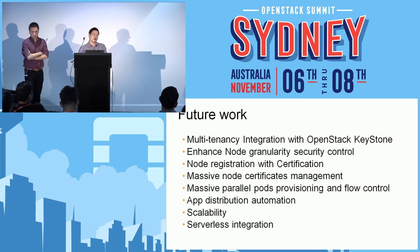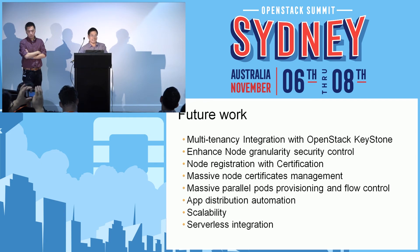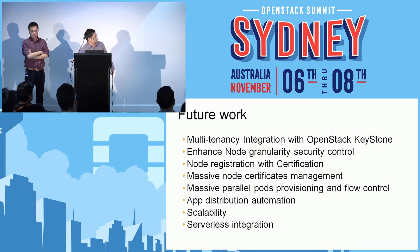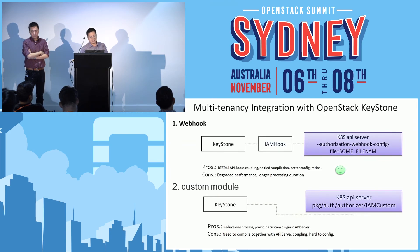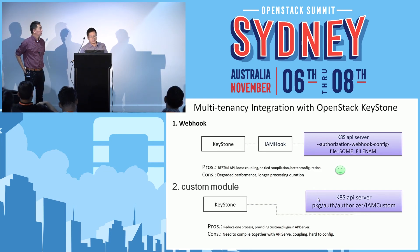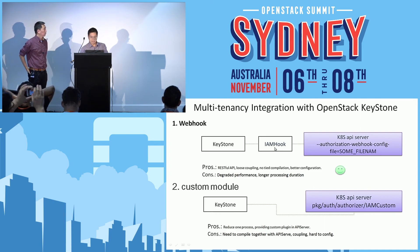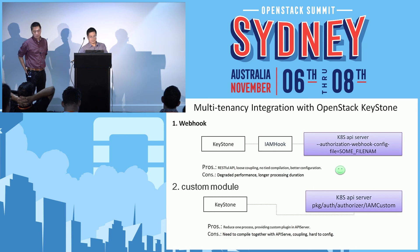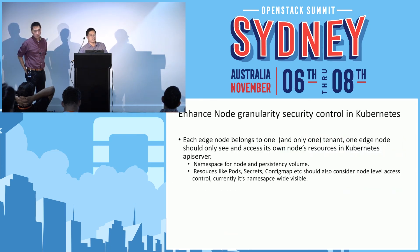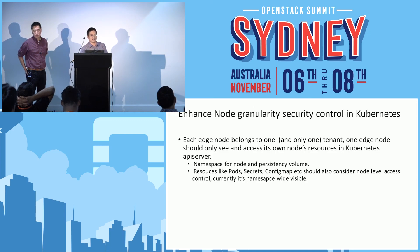There is still work to do for the edge computing service in the cloud. For example, multi-tenancy integration with OpenStack Keystone — one way is using a webhook, another is using a custom model, though that is not ideal. We also need to enhance node-level security control so that every node can only see and access its own resources. Additionally, massive node certificate management is needed. There are a lot of things to do, but I think multi-tenancy integration with OpenStack Keystone is the most important.